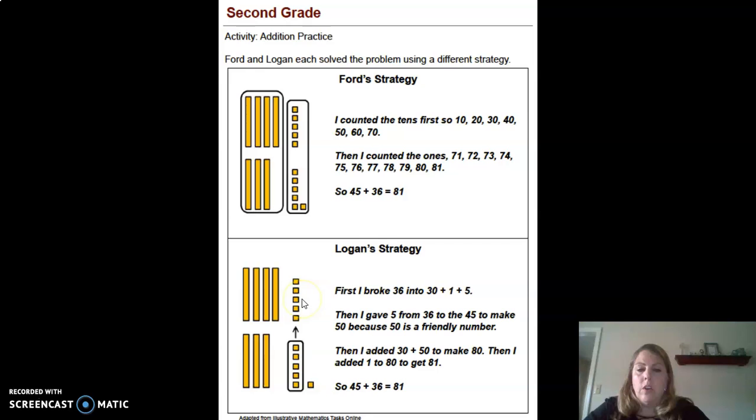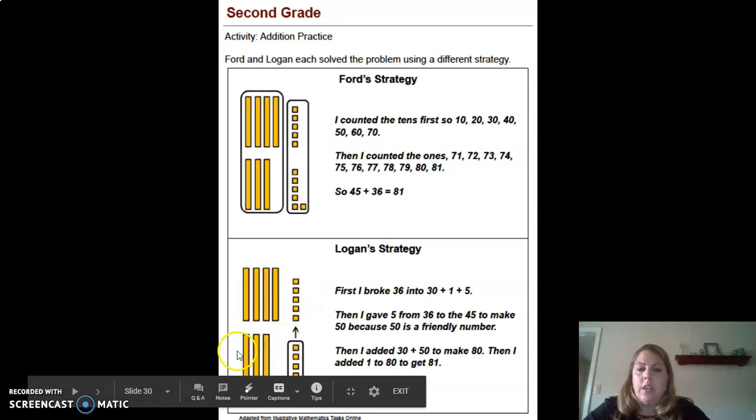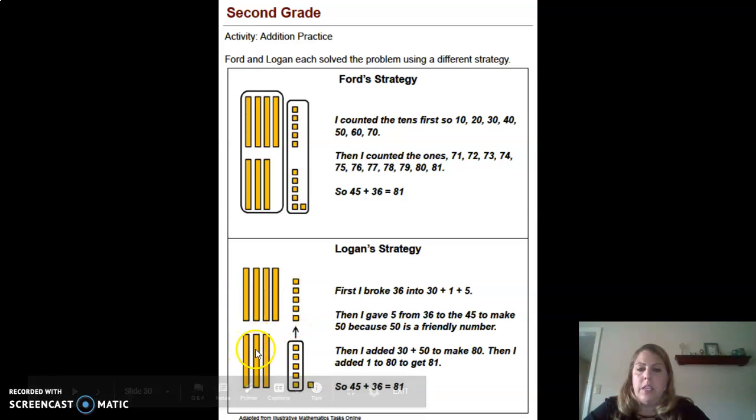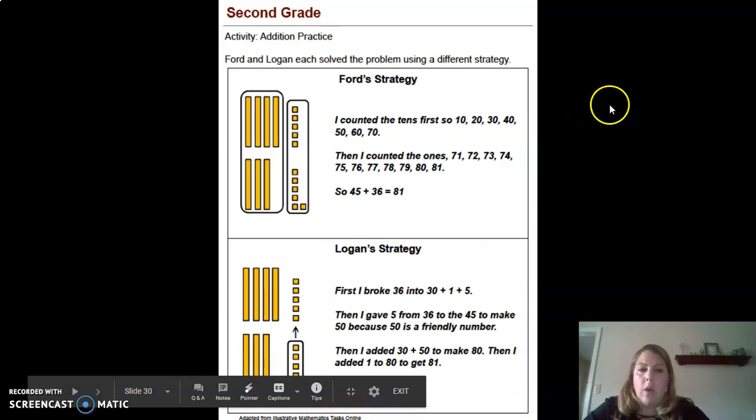It sometimes makes things easier to add together. So once he had the 50, then he added the 30. So 50, 60, 70, 80, and he had that one left over. That was how he was able to get his 81.